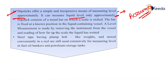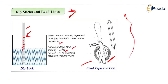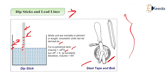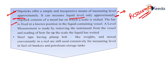A dipstick consists of a metal bar on which a scale is etched. The bar is fixed at a known position in the liquid-containing vessel. A level measurement is made by removing the instrument from the vessel and reading how far up the scale the liquid has wetted. That is how we measure the level of the liquid.